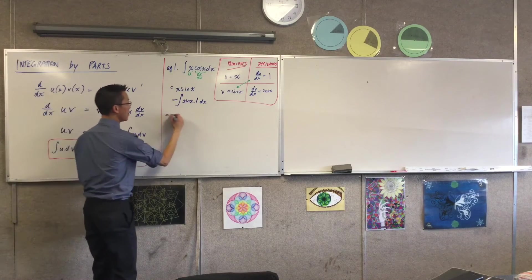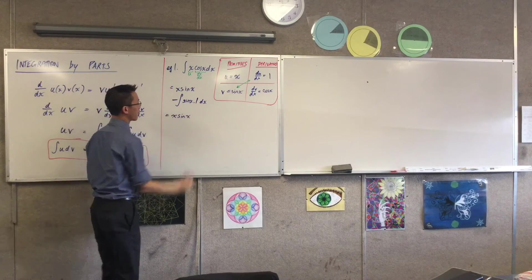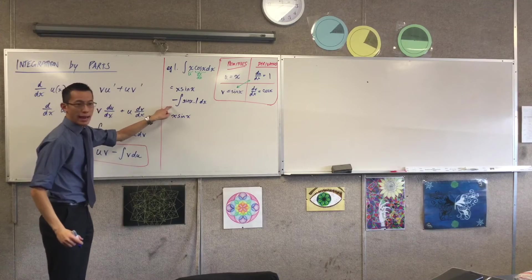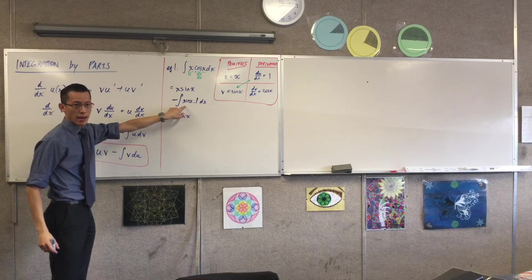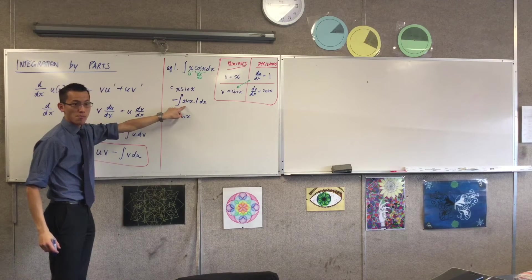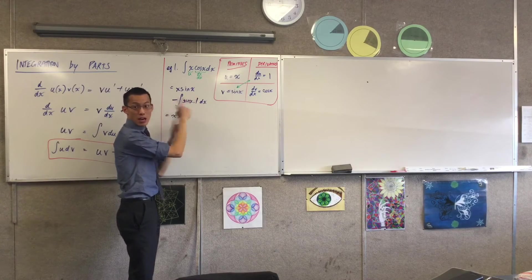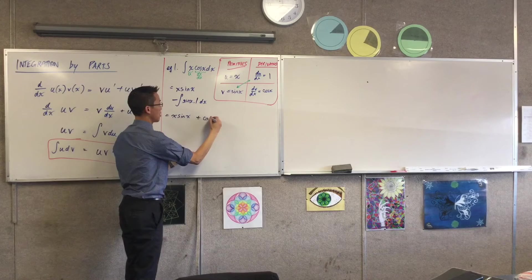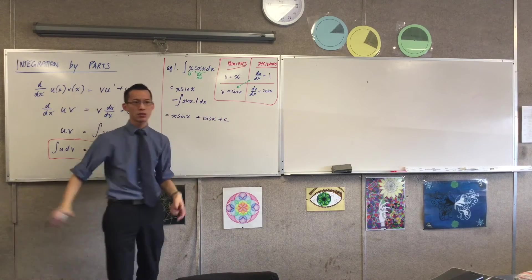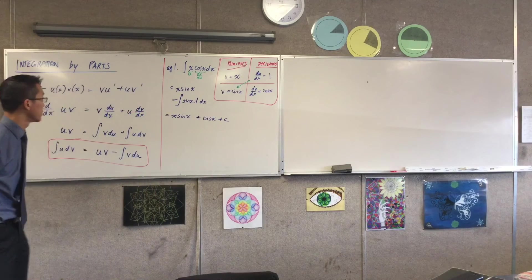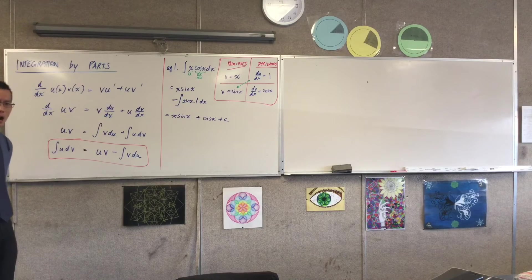All right, so I've already got x sin x out the front. Take away, what's the integral of sin x? Negative cos. And there's a negative out the front here, too. So they cancel, don't they? And now, because all my integrals are gone, now I'm going to write my constant of integration. So this is the answer I've got.